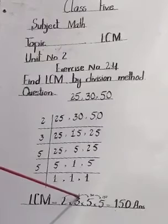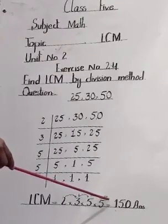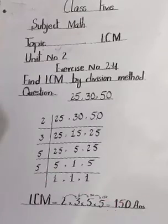Now we multiply: 2 times 3 is 6, 6 times 5 is 30, 30 times 5 is 150. The LCM is 150. Thank you.